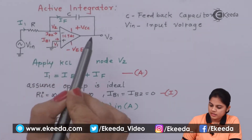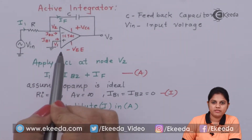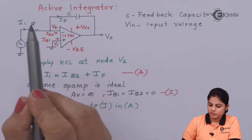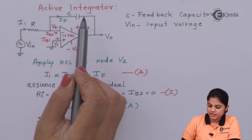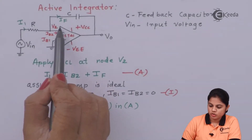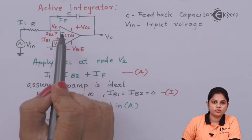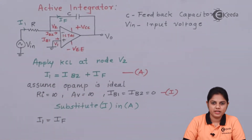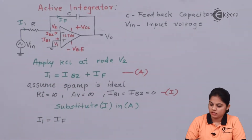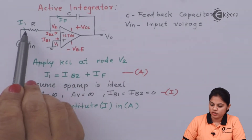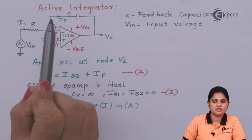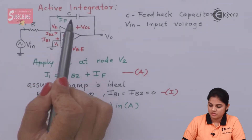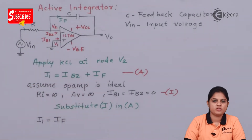This is the circuit diagram for an active integrator. It is called an active integrator because an op-amp is used, and an op-amp is an active element, along with passive components — resistance and capacitance.